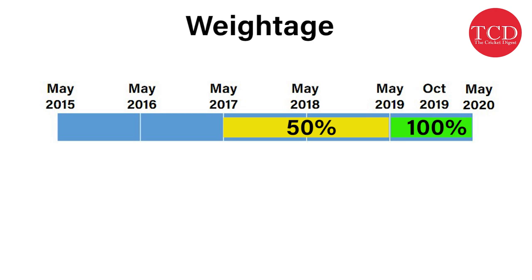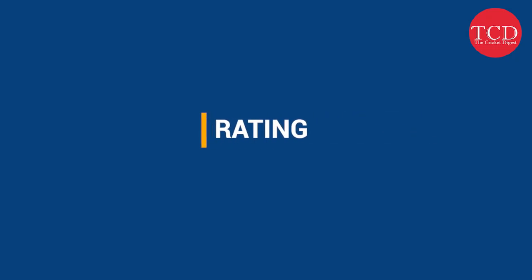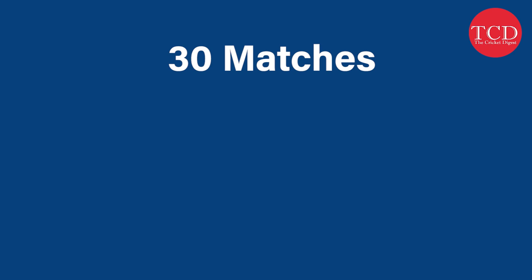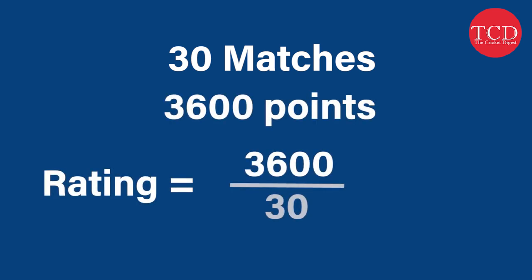That was about points. The final rating, which is used to rank the teams, is obtained by calculating the average points a team has earned over the specified period. For example, if a team plays 30 matches and accumulates a total of 3600 points, then the rating of that team would be 120.